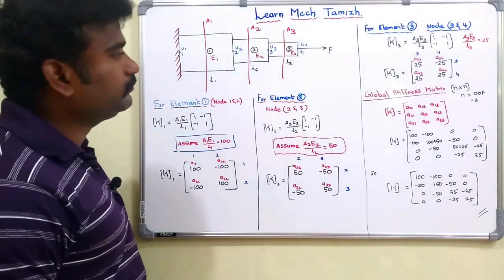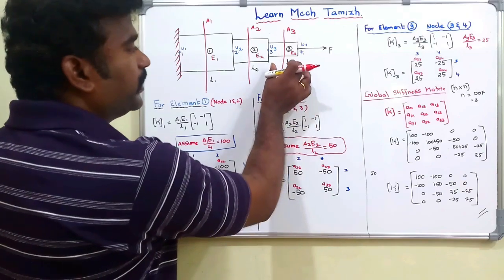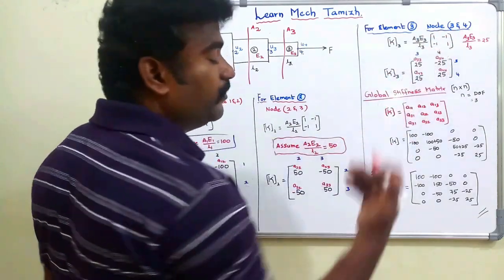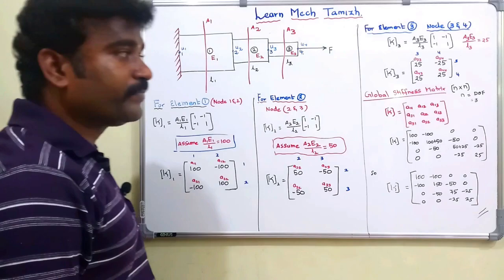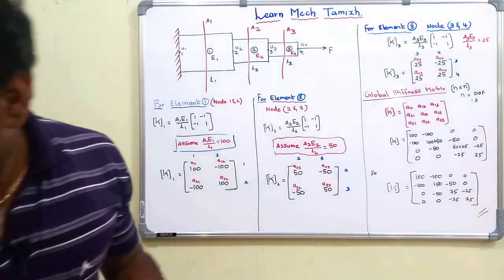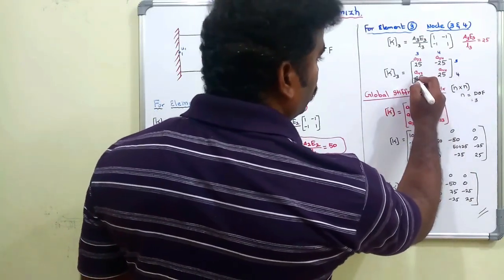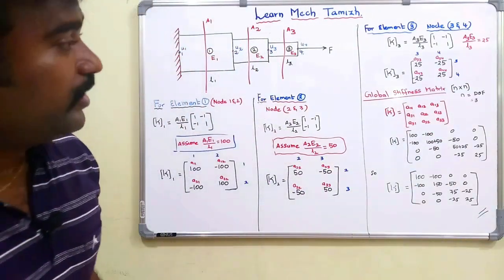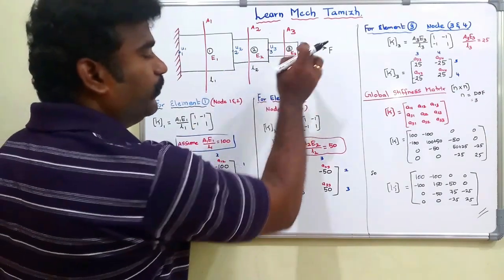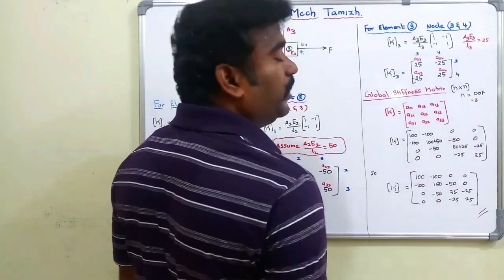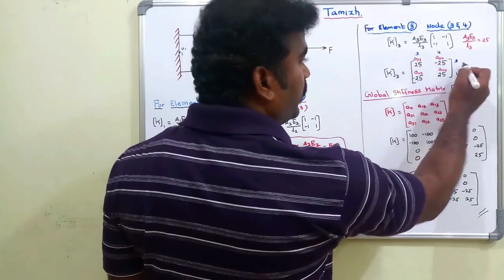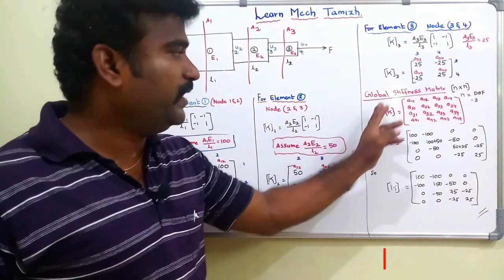For element 3, the node numbers are 3 and 4. The stiffness value is A3E3/L3; assuming this equals 25, the entries are a33=25, a34=-25, a43=-25, a44=25. The first row is 3 and the second row is 4; first column is 3 and second column is 4. This gives us A33, A34, A43, A44. Now we are going to assemble the global stiffness matrix.